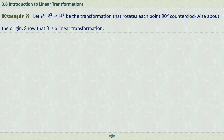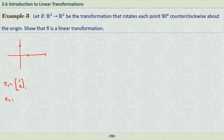Here we have two standard unit vectors. The first one is E1 with coordinates (1, 0) and the second one E2 with coordinates (0, 1). We know that if you pick any vector from two-dimensional space with components x and y, you can write it as x times E1 plus y times E2.